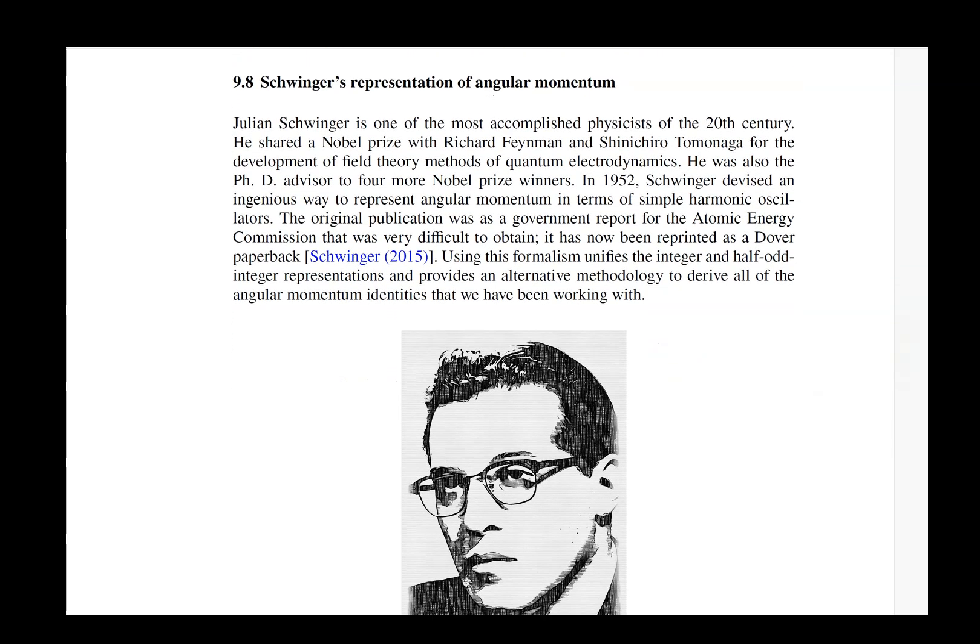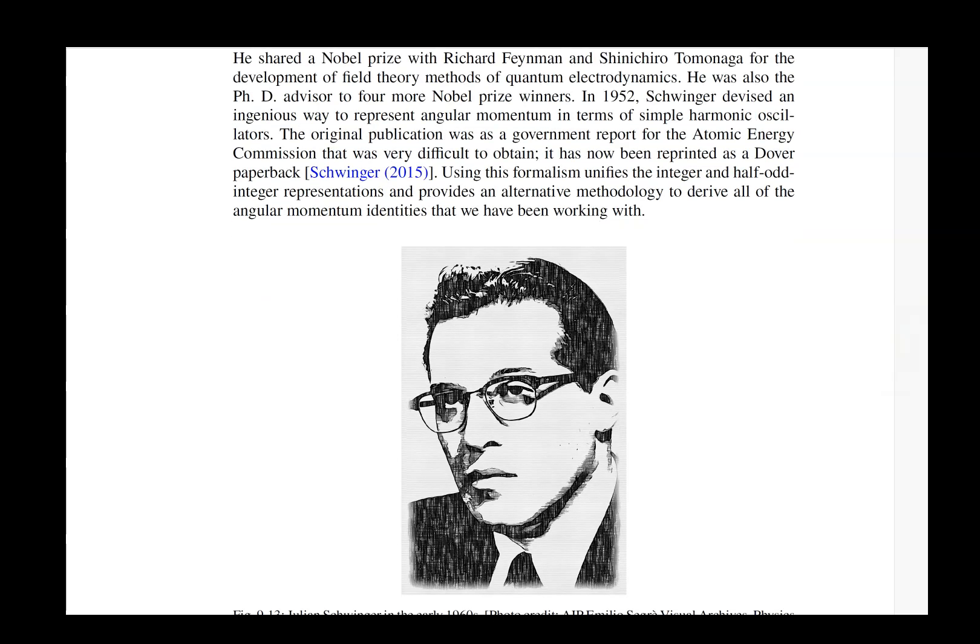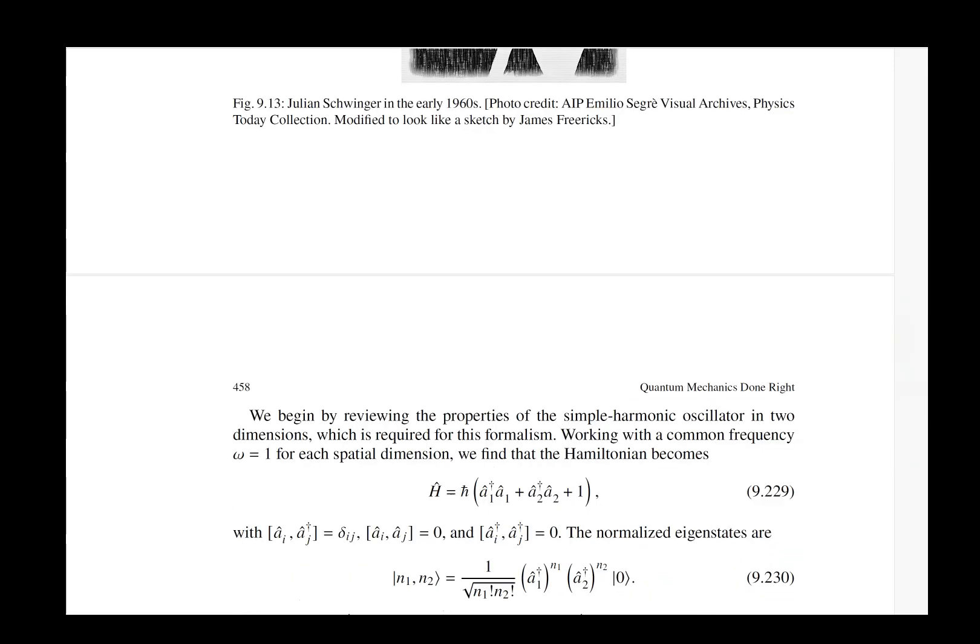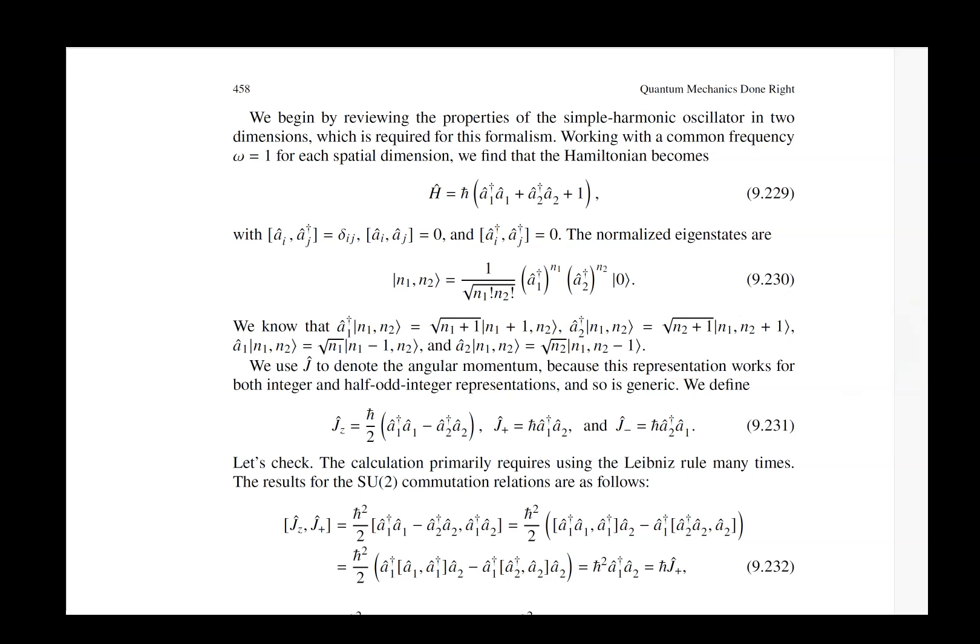And then we get to our final section of the chapter which is Schwinger's representation of angular momentum. Here's a nice picture of Schwinger from the 1950s or early 1960s. He showed how you can map angular momentum onto a two-dimensional harmonic oscillator. It's a really neat construction. The interesting story behind this is he worked this out for the government and it was part of an office of naval research report I believe. So people who wanted to learn about it he never published it in any kind of a journal so people who wanted to get a copy of it had to send him a letter.